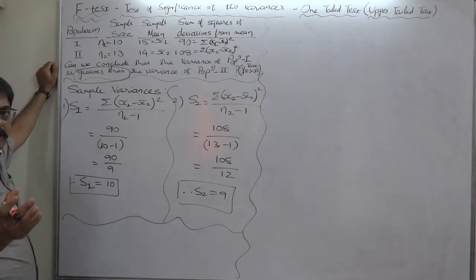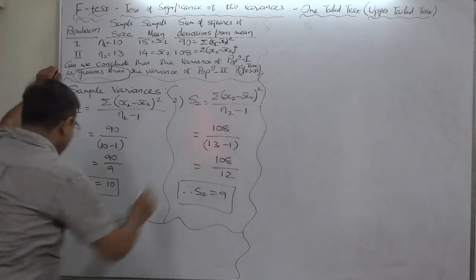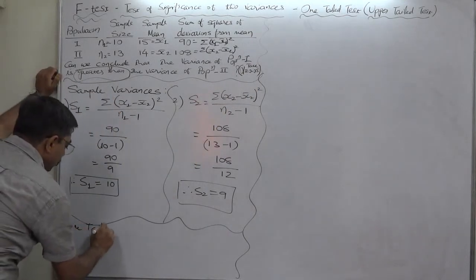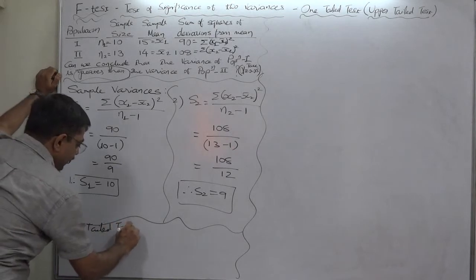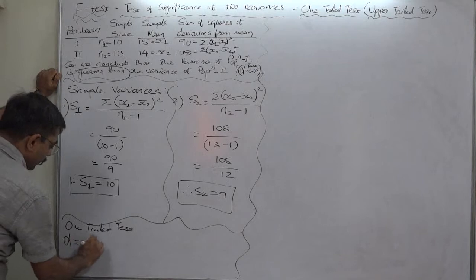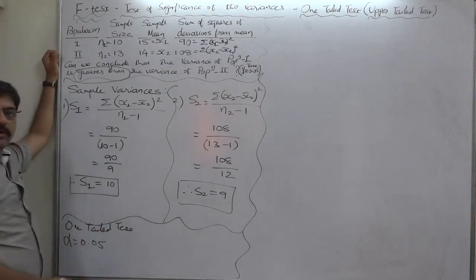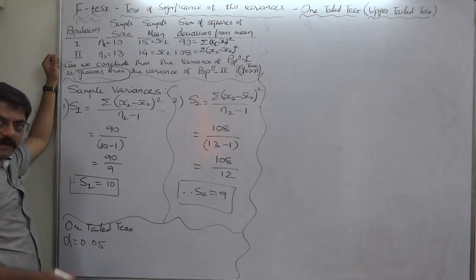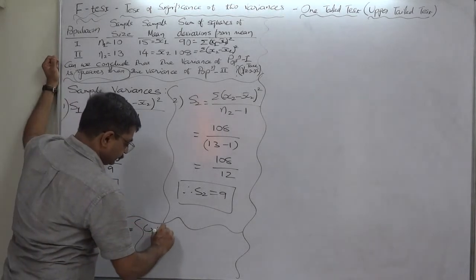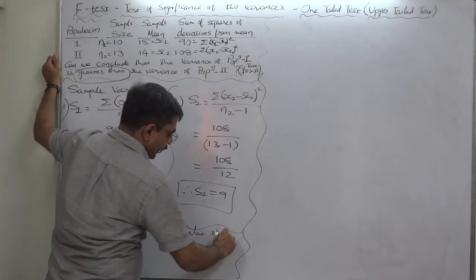These are now routine steps. This is a one-tailed test, also known as the upper-tail test. Let's find out the critical value of F.